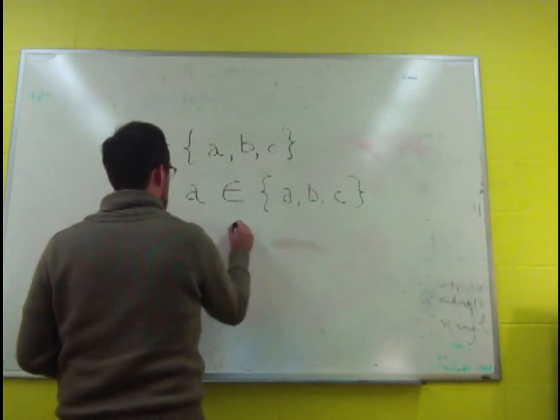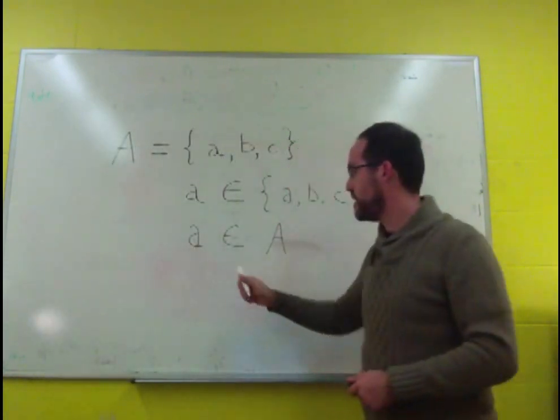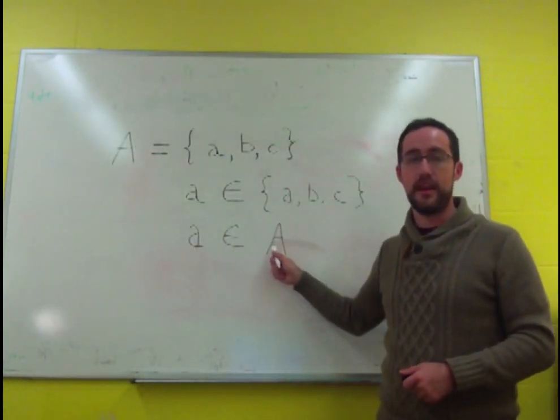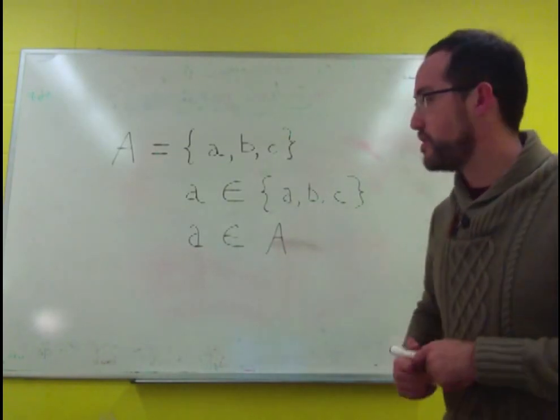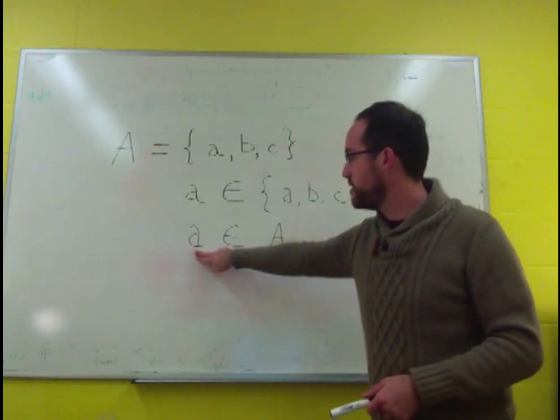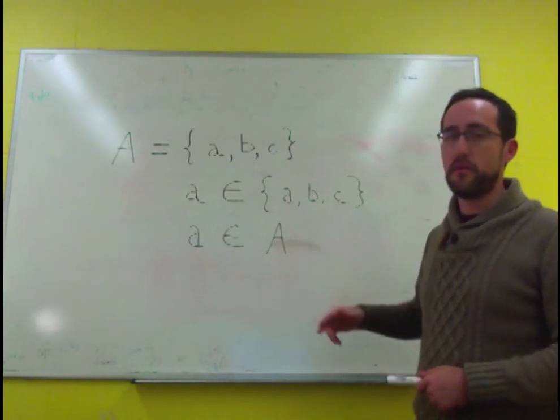And once we say that, well then now, instead of writing out that A is in the set A, B, C, we can just say that A is in set A. Object A is in set A. And these are not equivalent. Little a is not the same as A. It happens to just be a member of A.